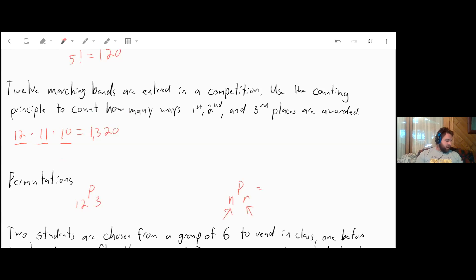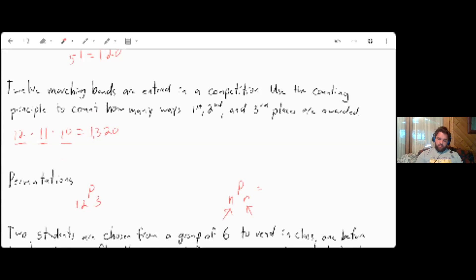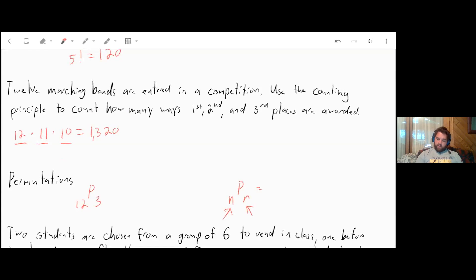And nPr is going to equal n factorial over n minus r factorial. And if we did that math, it would come out exactly the same. So for 12P3, we do 12 factorial over 12 minus 3 factorial. Well, 12 minus 3 is 9.